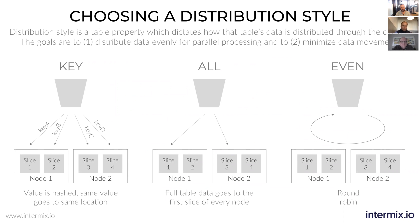You might not want even distribution when you're joining one particular table on a particular column often. When you're joining two tables on the same column, Redshift needs to move all that data into the same node so that it can process it in the subsequent step, which ends up creating a lot of network traffic and IO traffic on your cluster.